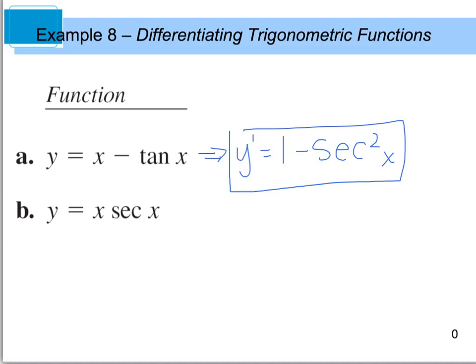Now for part 2, we have a product rule, and our product is x times secant x. So we do have to apply that. So if I take the first, which is x, times the derivative of the second, the derivative of secant is secant x tan x.